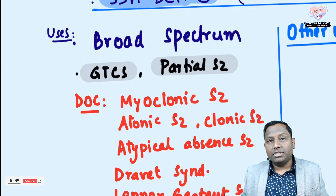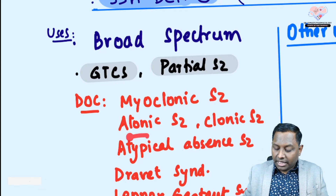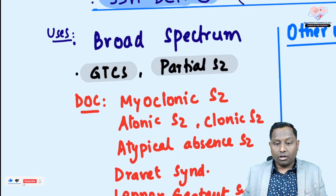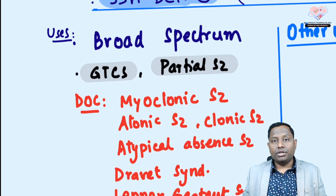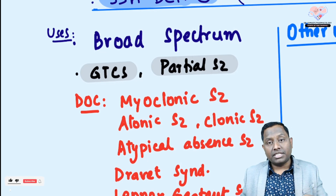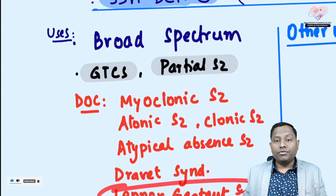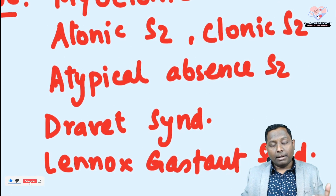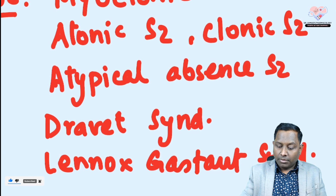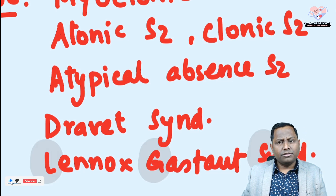Valproate is also drug of choice in atypical absence seizure — atypical absence means absence seizure presenting with a post-ictal deficit or motor involvement. Typical absence has no post-ictal deficit and no motor involvement, but if either is present it is called atypical absence. Valproate is the drug of choice. It is also drug of choice in Dravet syndrome (a variant of GTCS) and in resistant cases of GTCS.